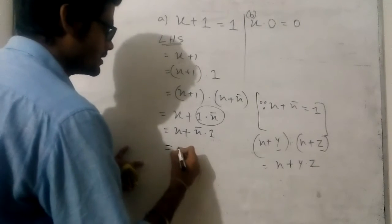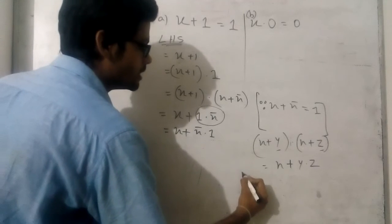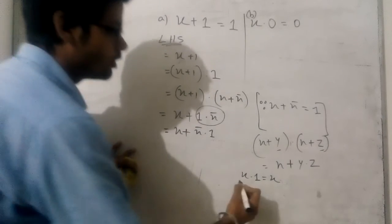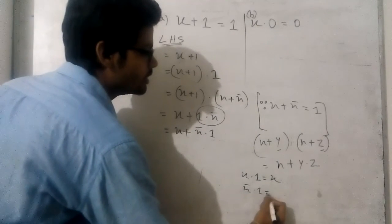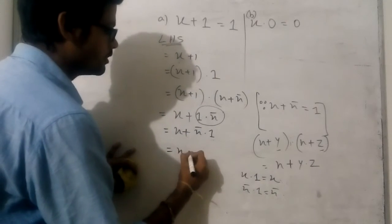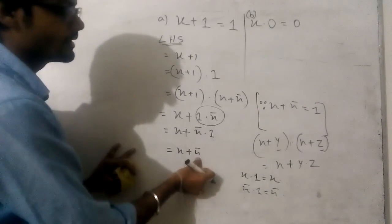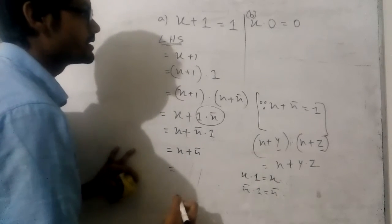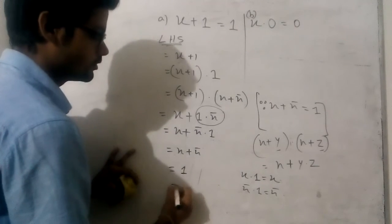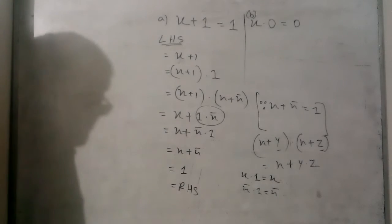Now we know that a variable into 1 equals the variable. So x bar into 1 equals x bar. We can now write x plus x bar. Because x bar into 1 is x bar, and we also know that x plus x bar equals 1.